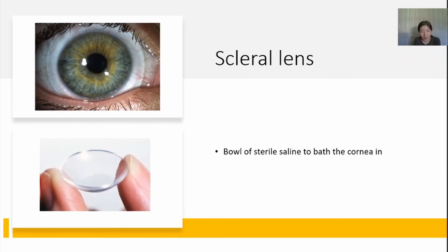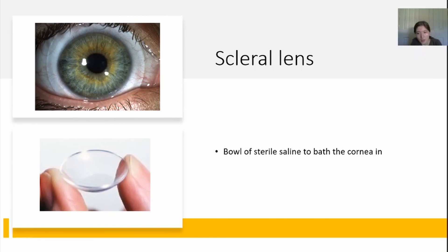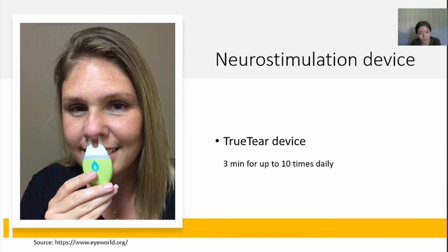A scleral lens is a type of contact lens that can be used to treat dry eye. Unlike a regular soft contact lens, this is a very hard contact lens — it's large and shaped like a bowl. It sits on the sclera, or the white part of the eye, not directly touching the cornea. Therefore it creates a reservoir: if you fill it with preservative-free saline and put this lens on your eye, your cornea is constantly bathed in the saline solution — and that is how it treats dry eye. For many advanced dry eye patients where other methods have not worked, they can often find relief using this. You need to be fitted by a skilled optometrist, and sometimes insurance covers the fitting and lens material.